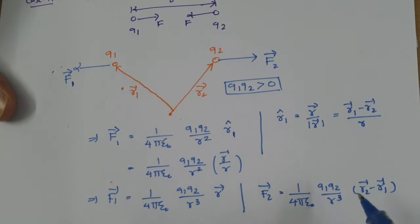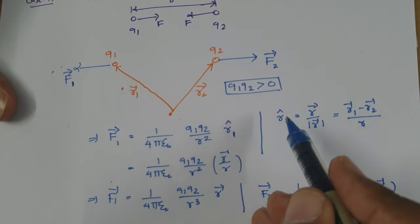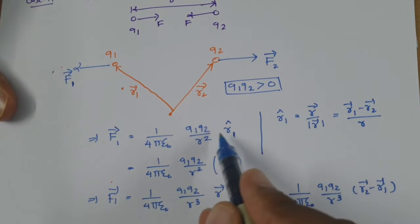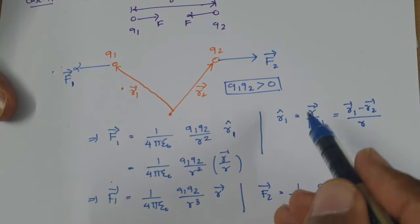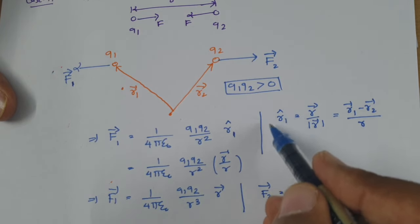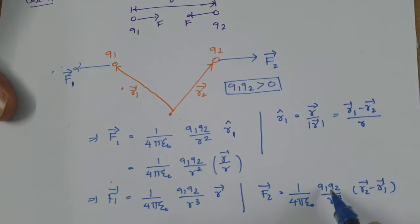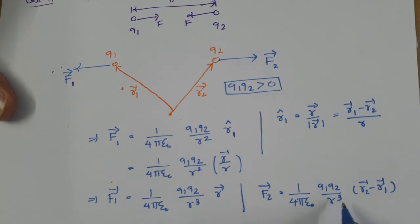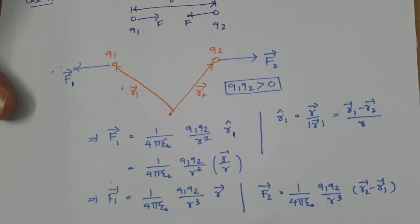That difference happens because of the unit vector. The direction vector equals direction divided by its magnitude, which gives the unit vector. That is why the formula changes from R² to R³ when the direction vector is included. So this is what you need to keep in mind — sometimes it is written with R cube, but that R cube is happening because of the unit vector.